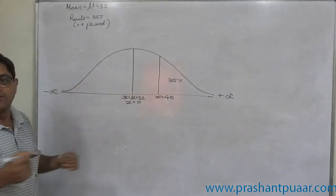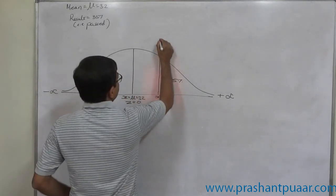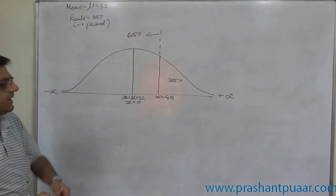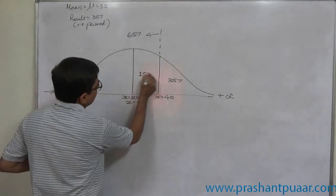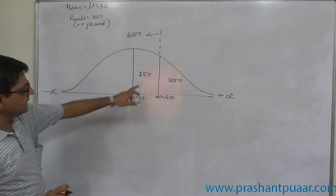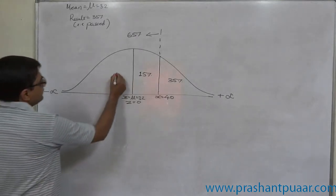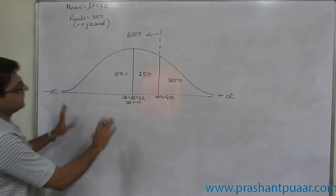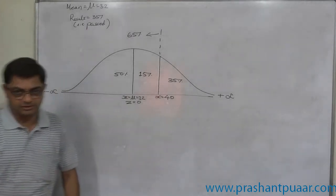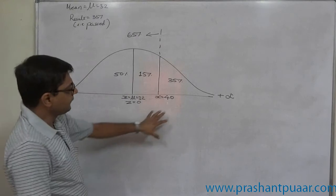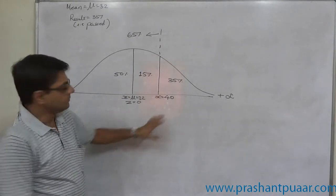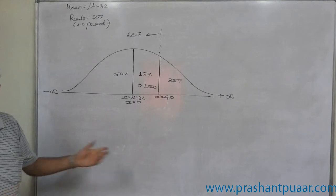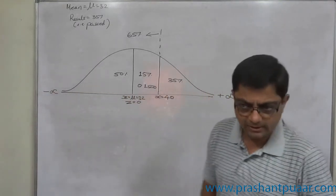65% of students failed in the examination. In the normal distribution diagram, out of this 65%, 15% is from the right-hand side area and the remaining 50% is from the left-hand side area. This is the interpretation of the data directly available from the question. On the basis of the area 0.15, we can find the Z score through the reverse process from the table — Z equals 0.39.